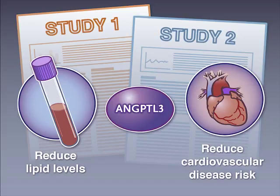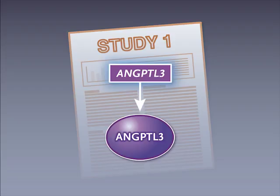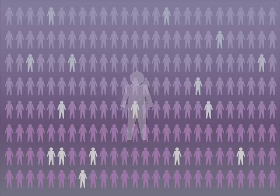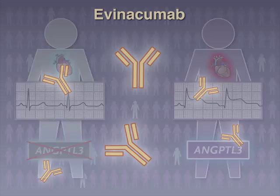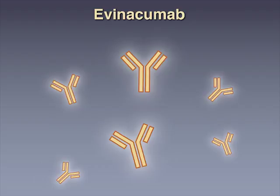In the first study, investigators analyzed the gene that encodes angiopoietin-like 3 in over 180,000 participants from five cohorts. They found that participants who carried a loss-of-function variant of the gene had significantly lower serum levels of triglycerides, HDL cholesterol, and LDL cholesterol, and a lower prevalence of coronary artery disease than did those who did not carry such a variant.